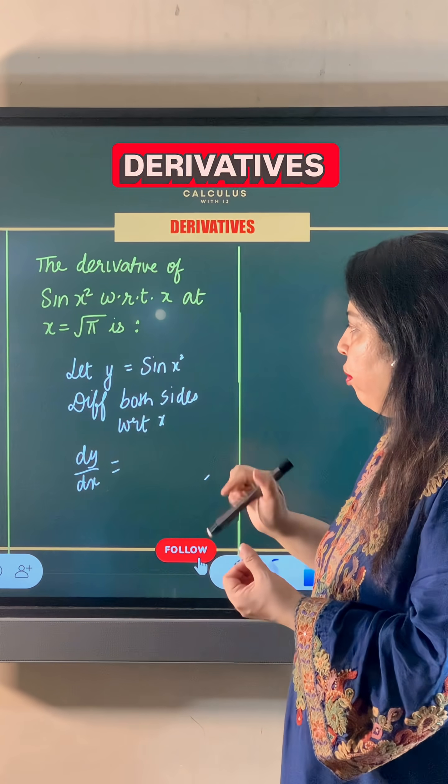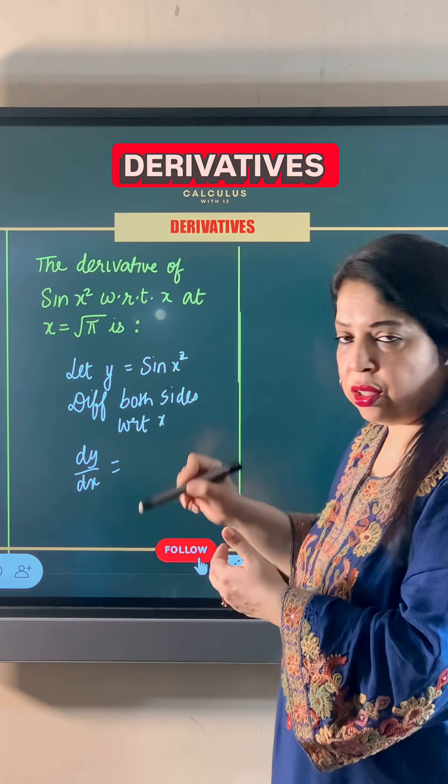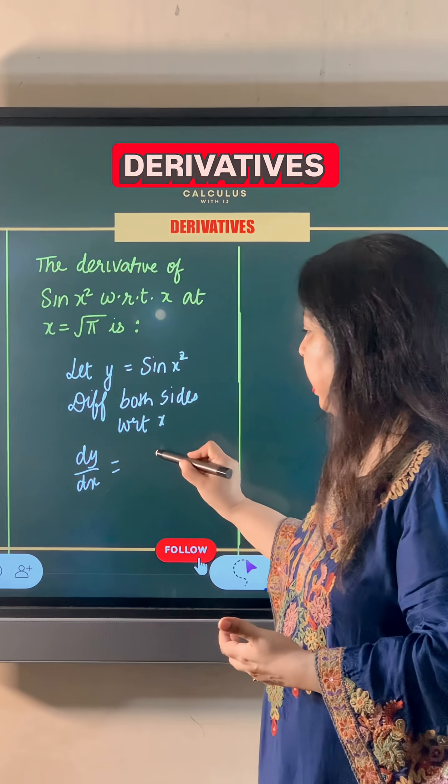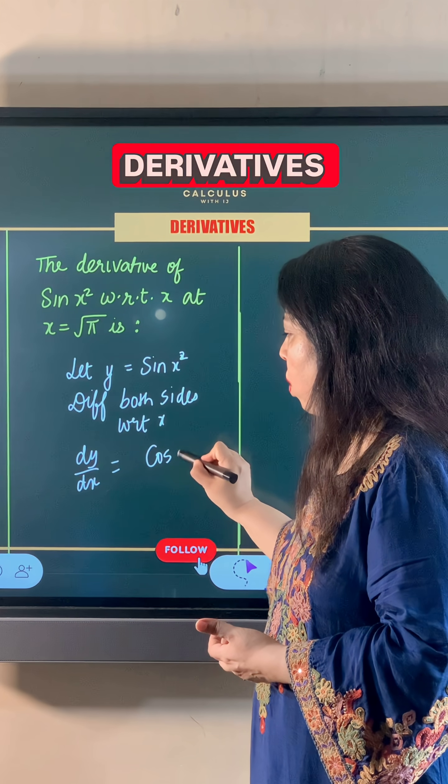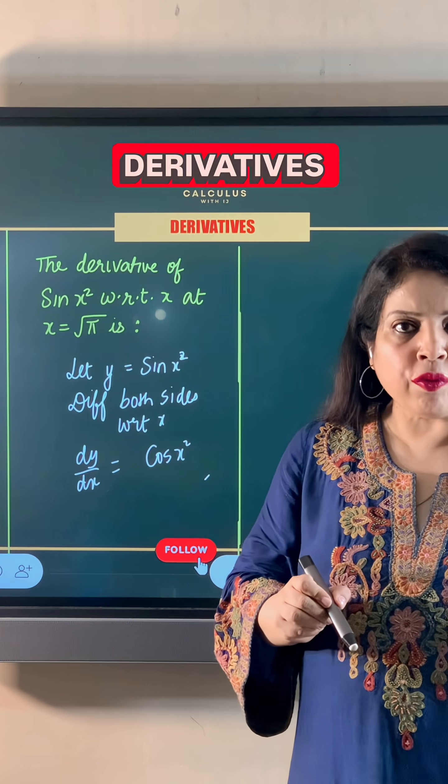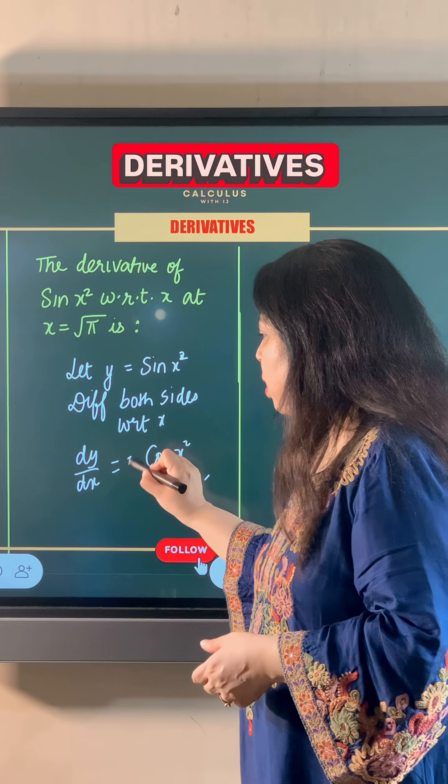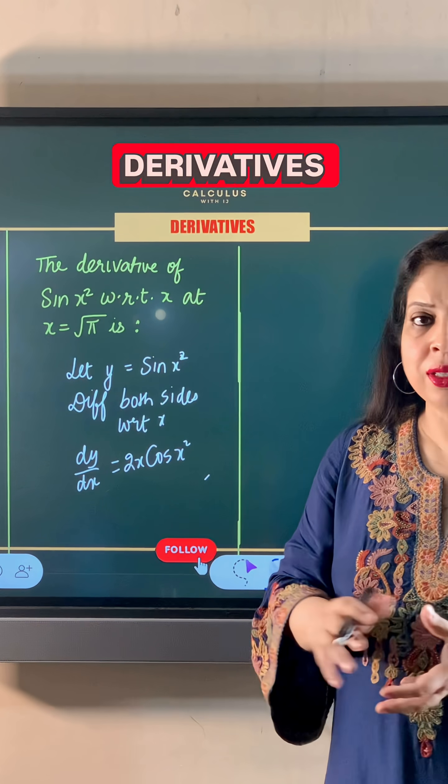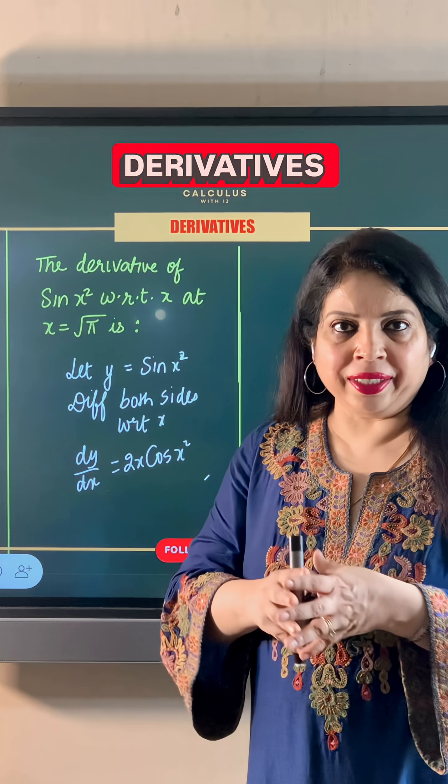So its complete derivative will be the derivative of sin x² along with the derivative of x². Derivative of sin x² is cos x². Now the derivative of x² is 2x. So dy/dx, or the derivative of y with respect to x, is 2x cos x² in this case.